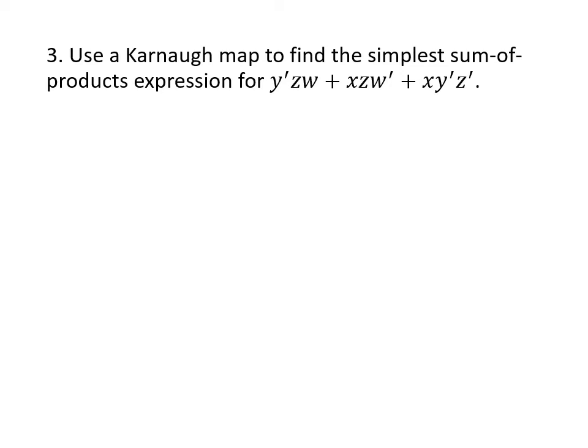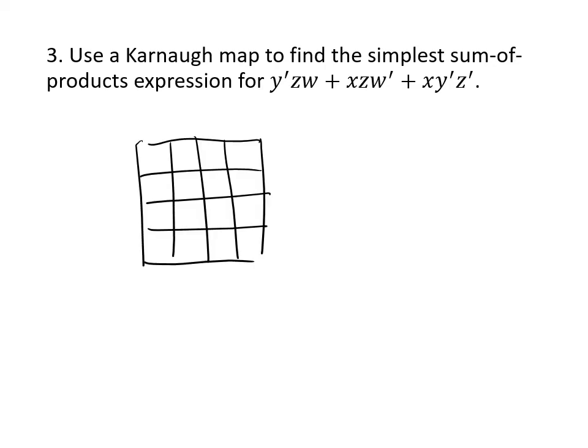Sometimes we'll give you a sum of products expression and you'll have to draw the Karnaugh map yourself, then figure out how to group the check marks together. We see here that we have four variables: x, y, z, and w, so we're going to need a four-by-four square. We'll label the left side of our square with x's and y's and the top with z's and w's. It's a good idea to start with x y in the first row and z w in the first column.